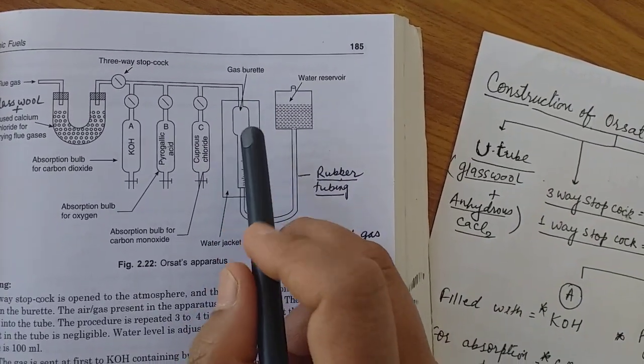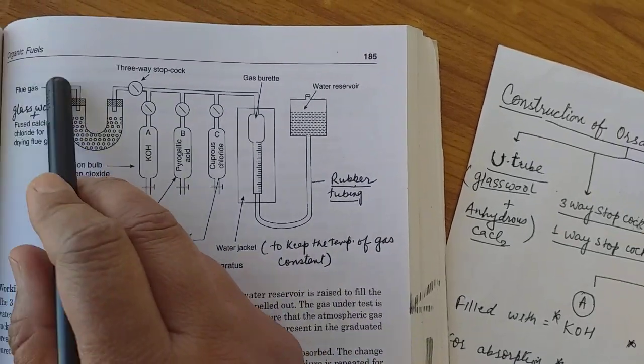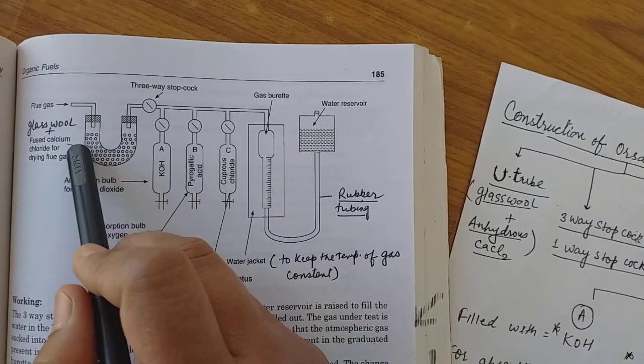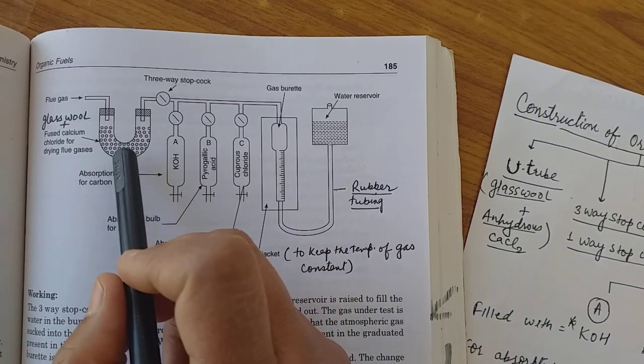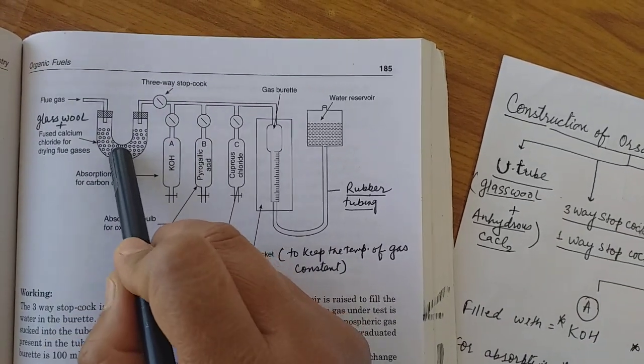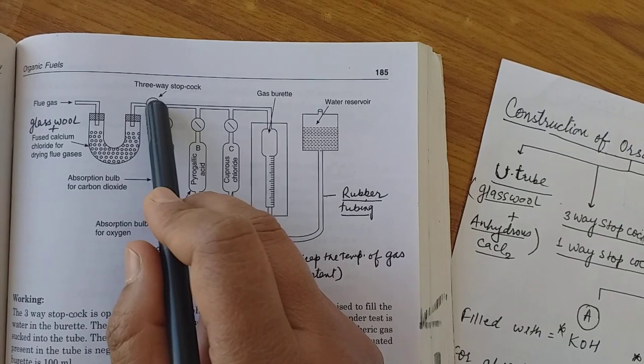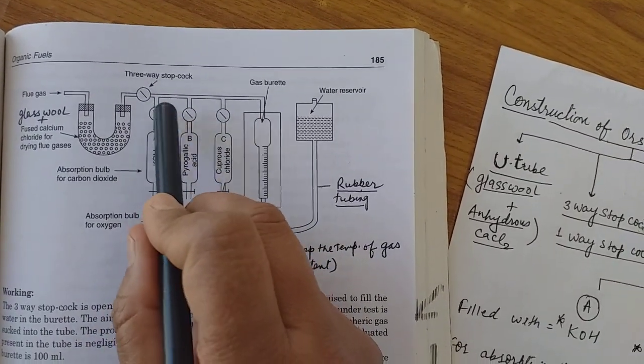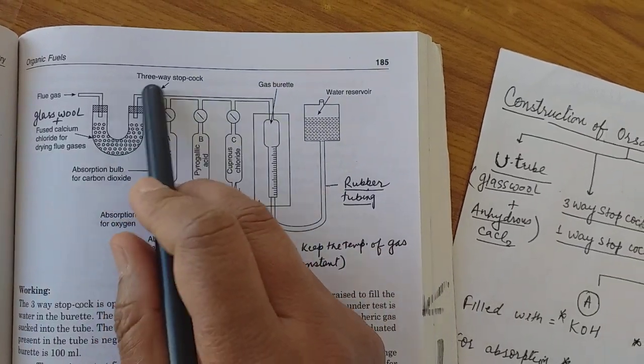After that, when this gas is coming here, first by the U-tube it removes the unburnt carbon particle, smoke particle, and moisture. After this, three-way stopcock opens to the first bulb. Here there is a one-way stopcock. Flue gas passes here.